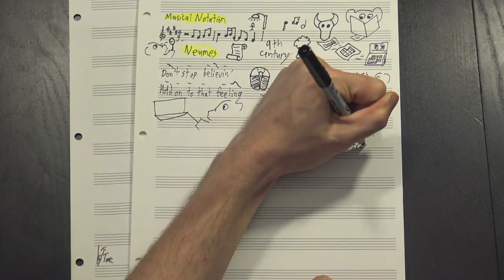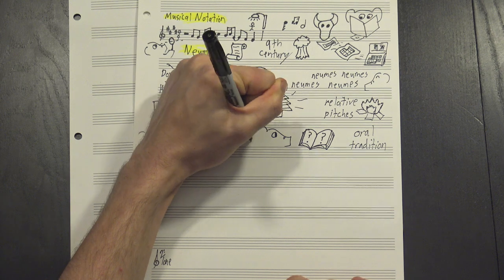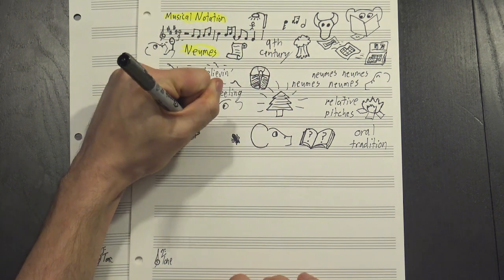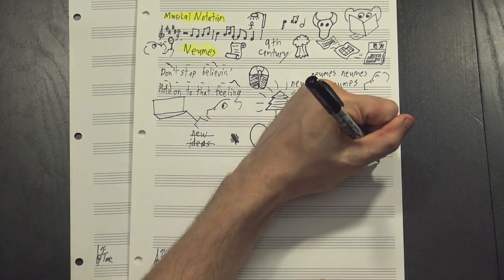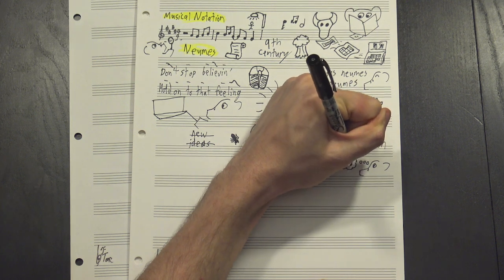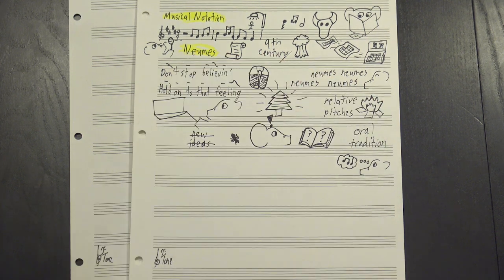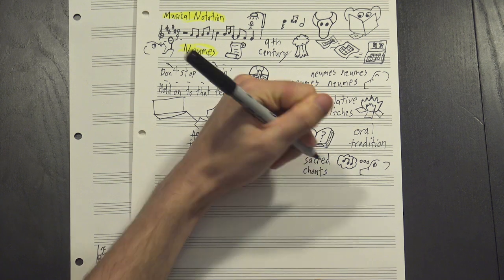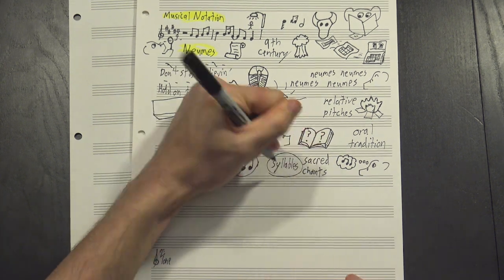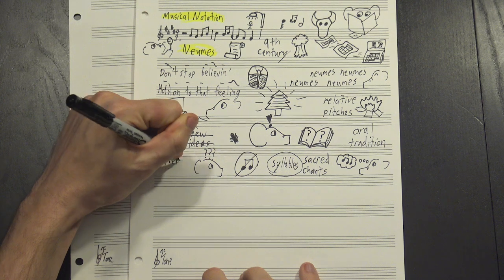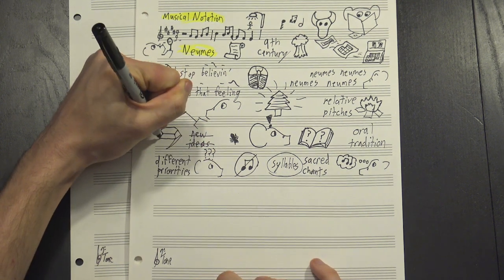First of all, it was primarily an oral tradition. Most people couldn't read, you learned songs by ear. The point of neumes, then, wasn't so much to communicate new ideas as it was to help you remember the details of songs you already knew. The other important point is that this was used mostly for sacred chants, so the syllables, not the notes, were the most important part. It seemed weird to us now, but they just had different priorities and their system reflected it.